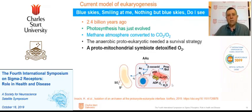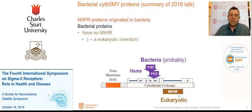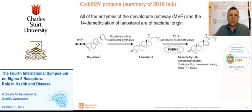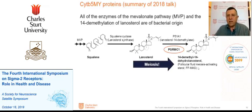That study showed that there are cytochrome B5 and MAPR-like proteins that came from bacteria — they have no MEHR insert, so the MEHR is a eukaryotic invention — but they do have tyrosinate heme chelation. All of the genes in this system came from bacteria: there's the mevalonate pathway, squalene cyclase which produces the first sterol lanosterol, and cytochrome P51 and PGRMC1 which then modify lanosterol into a FF-mass product that is actually a meiosis-inducing factor. So there's the possibility that PGRMC1 is involved in meiosis induction.